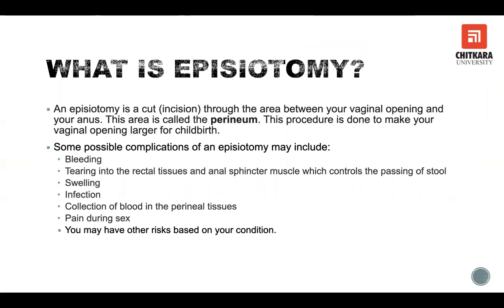Now, what is episiotomy? Episiotomy is a type of surgery that is done on an area called the perineum, that is between your vaginal opening and your anus. The main purpose of this surgery is to facilitate first-time vaginal deliveries in mothers.